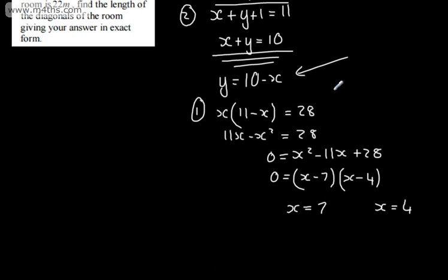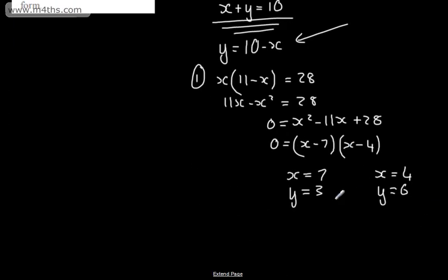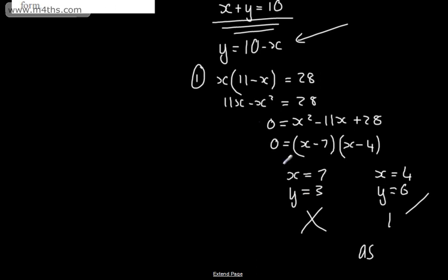Now finding the y-coordinates using y equals 10 minus x: when x equals 7, y equals 3; when x equals 4, y equals 6. Since we're told y is greater than x, the valid solution is x equals 4 and y equals 6, as here y (6) is greater than x (4).